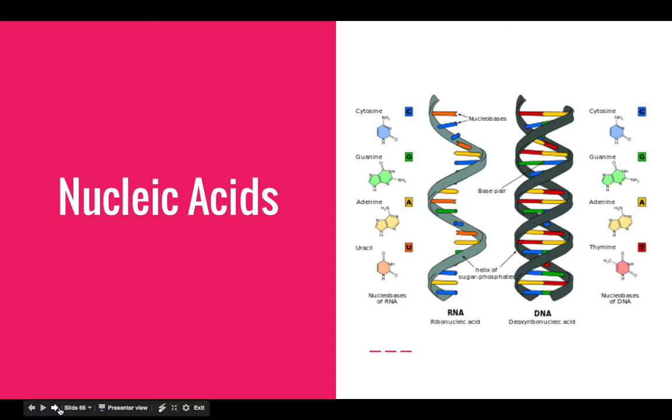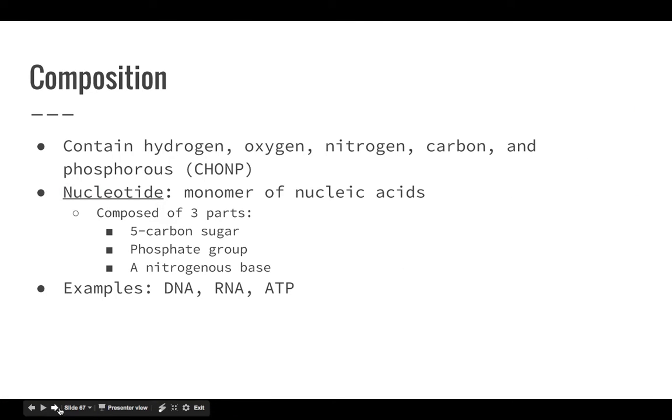So nucleic acids are things like DNA, RNA, and ATP, and they are composed of hydrogen, oxygen, nitrogen, carbon, and phosphorus. So CHONP. Instead of an N, it's a P.